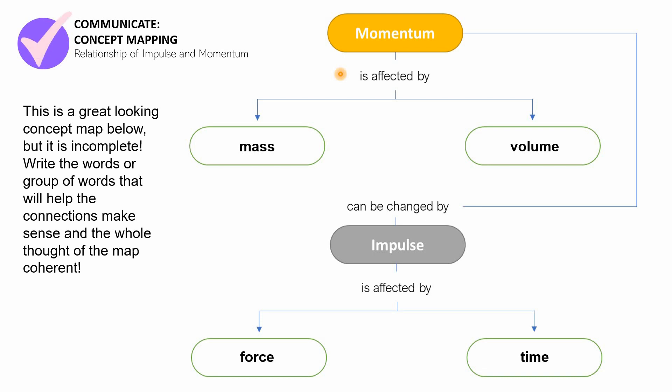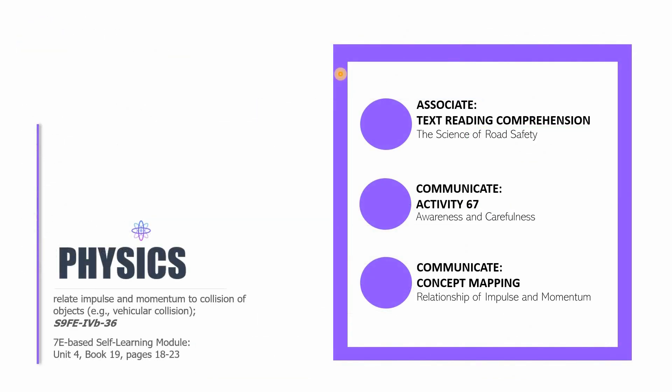Alright, that is the conclusion of this video lesson. Remember that in this session, the 12th session, we discussed the following: We did an activity from Associate Text Reading Comprehension — The Science of Road Safety. Then we did Communicate Activity 67 — Awareness and Carefulness. And the last one is Communicate Concept Mapping — Relationship of Impulse and Momentum. I am so glad that you're still here studying physics with me. I am Sir CJ, and I hope that I will see you in the last video lesson related to book number 19. Have a good day!